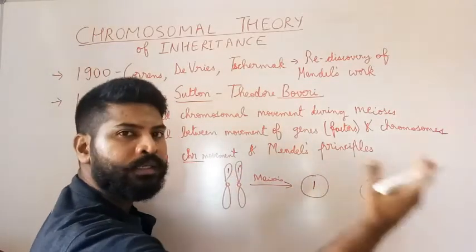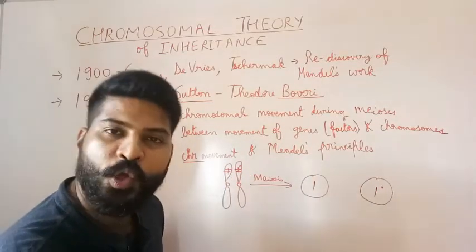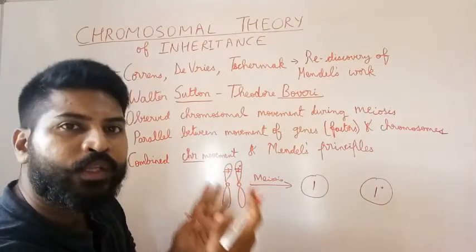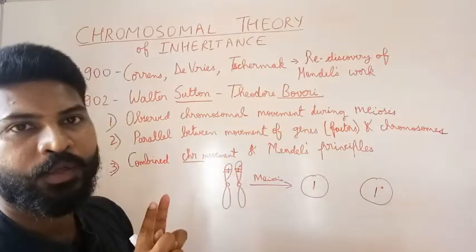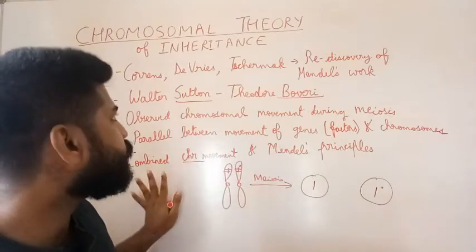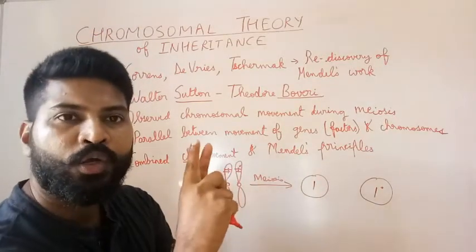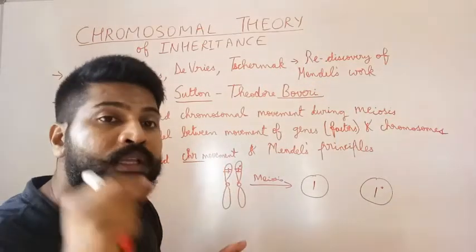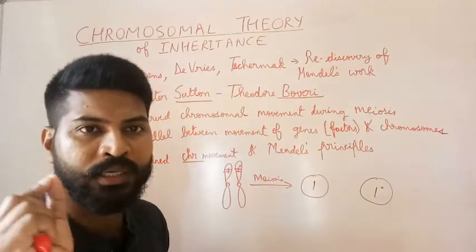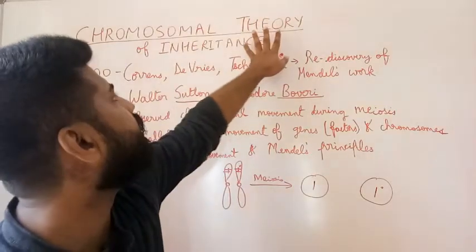Sutton and Boveri drew a parallel between the movement of genes and the movement of chromosomes. Mendel said factors will segregate during gamete formation independent of each other — this was parallel to the chromosomal movement. When chromosomes are segregated and distributed to the gametes, the factors on the chromosomes also get segregated. When gametes fuse, the chromosomes come together and so do the genes. According to the chromosomal theory of inheritance, during cell division, when chromosomes separate, the factors or genes on them also get separated as discrete units, which is responsible for inheritance.